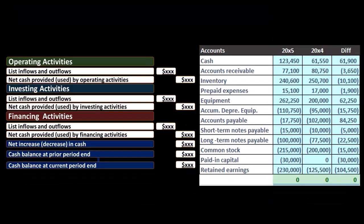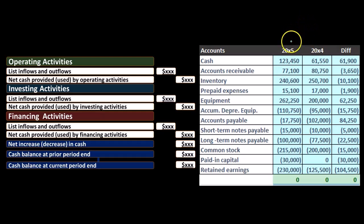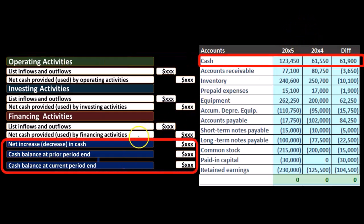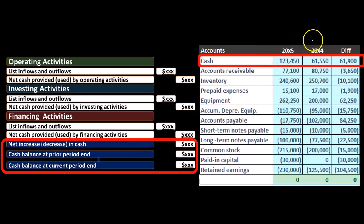If we think about this in relation to our worksheet, which we had basically two time periods — a comparative balance sheet here — current period, prior period, then we could see that this whole activity down here matches up with our activity up top. We have the current period information, prior period, and the difference. We're really looking for that difference because that's showing the activity.